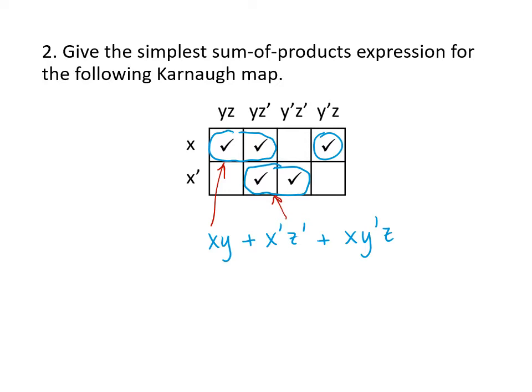The term x prime z prime corresponds to the grouping where x always appears as x prime, y appears as both y and y prime so we leave that out, and z appears as z prime. Then we have a single check mark all by itself, so we have to include all the variables: x, y prime, and z.